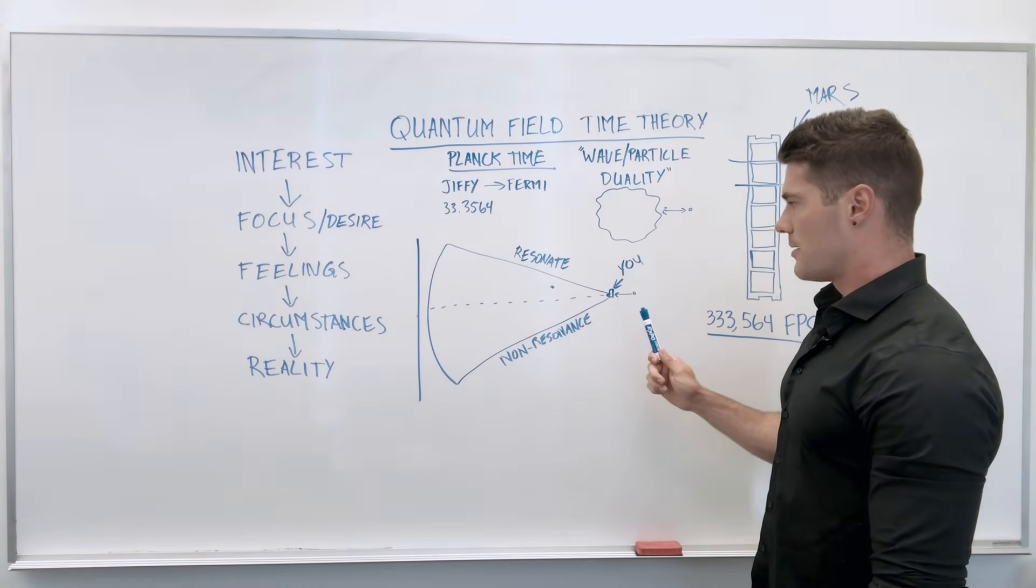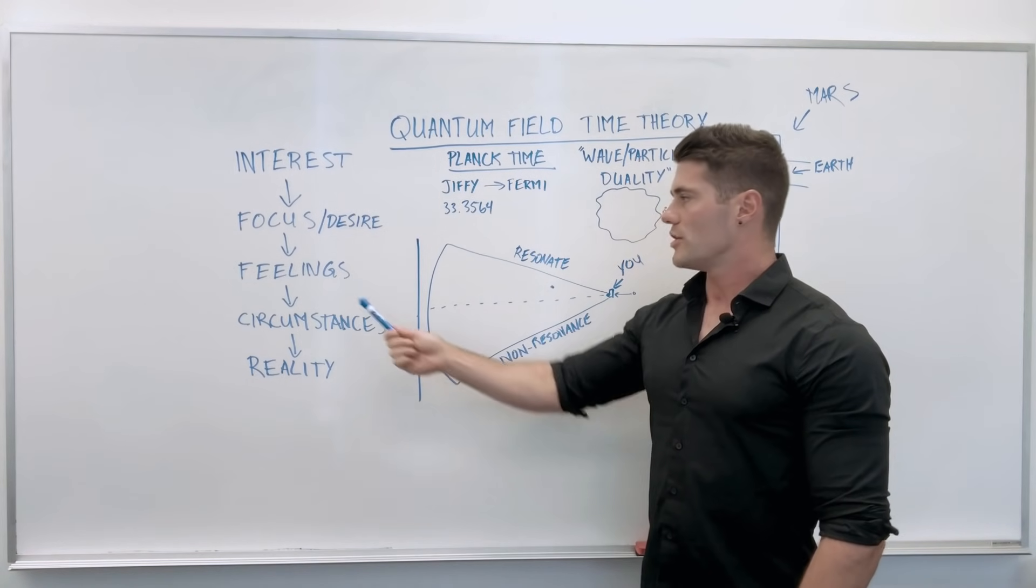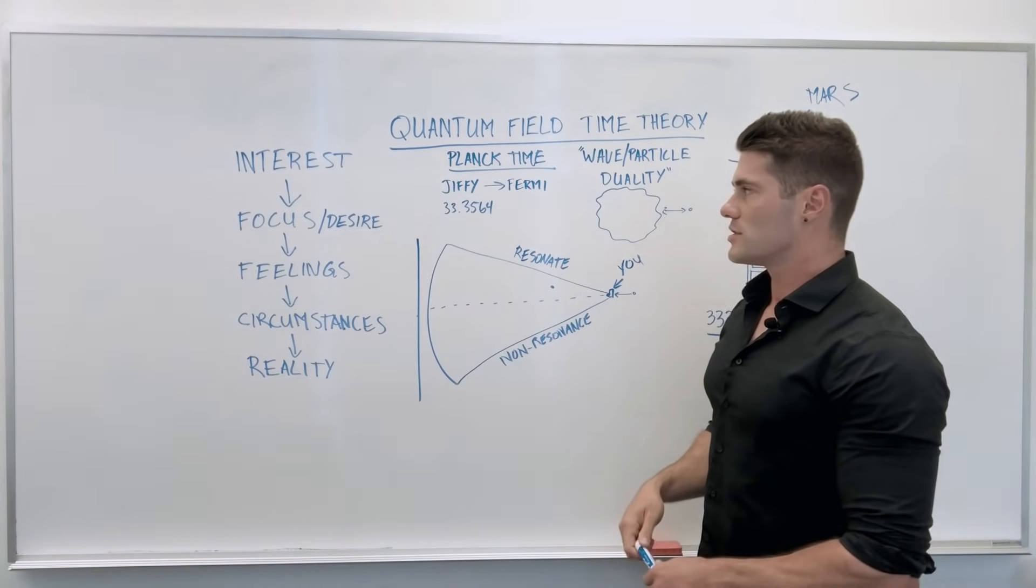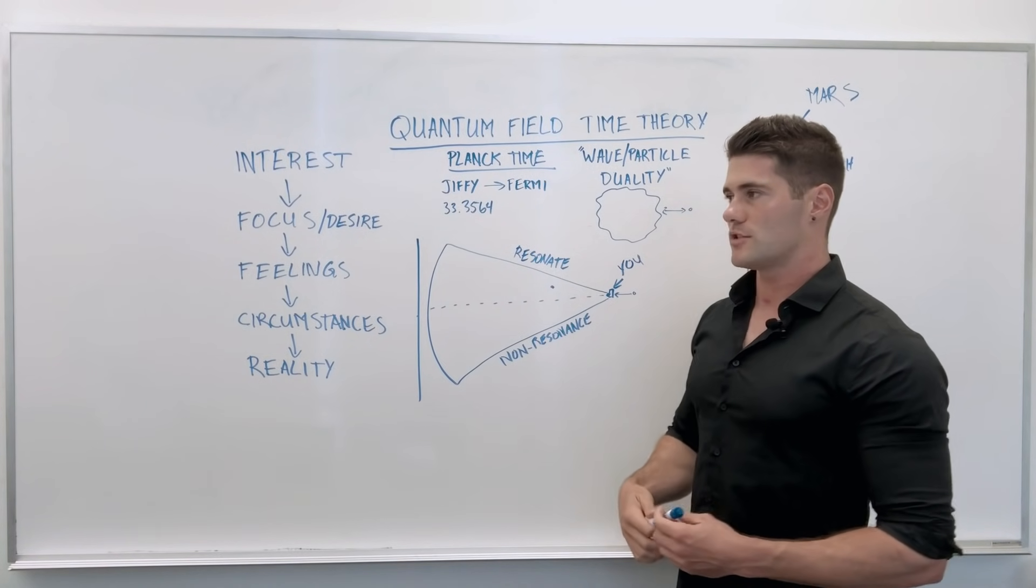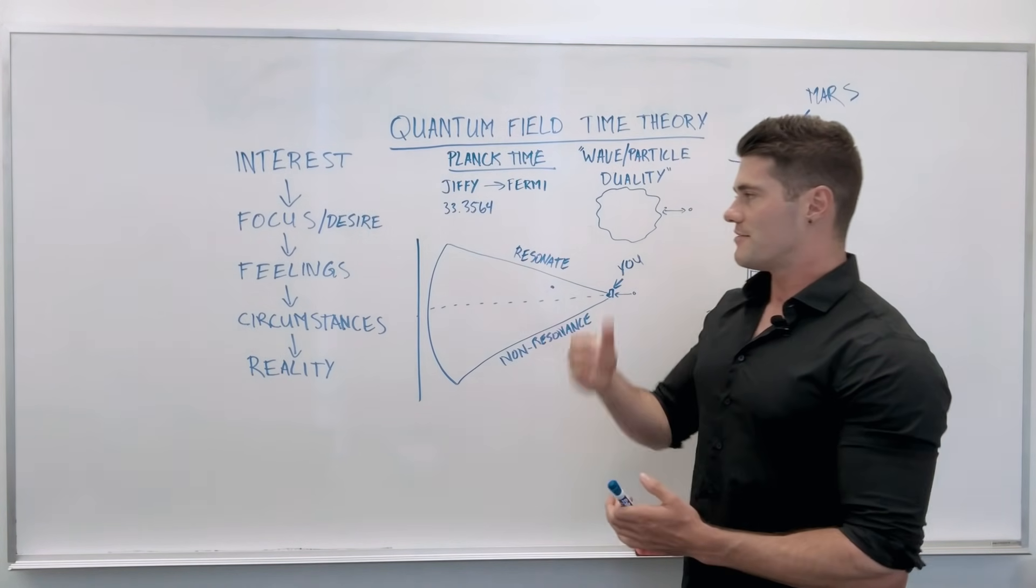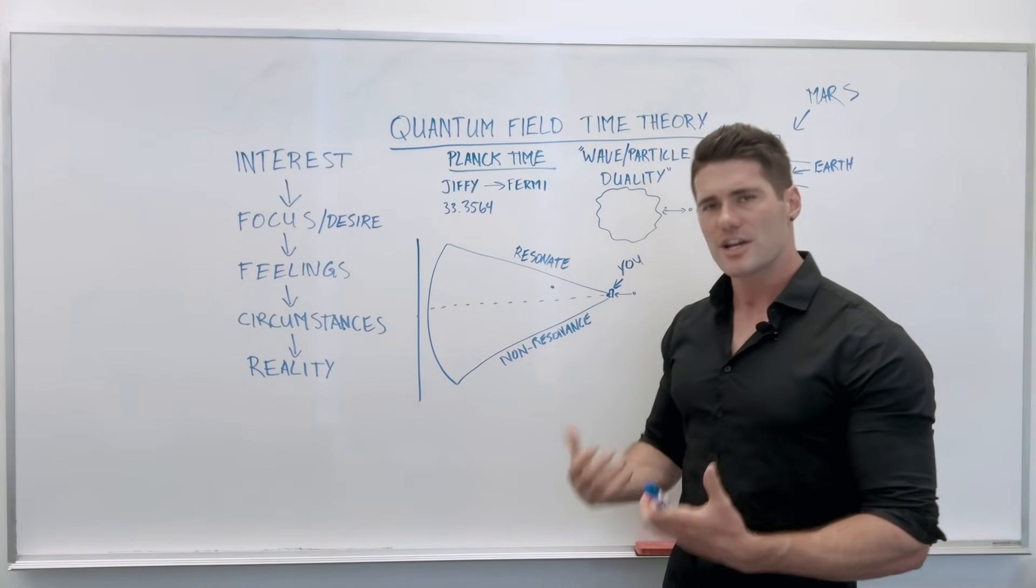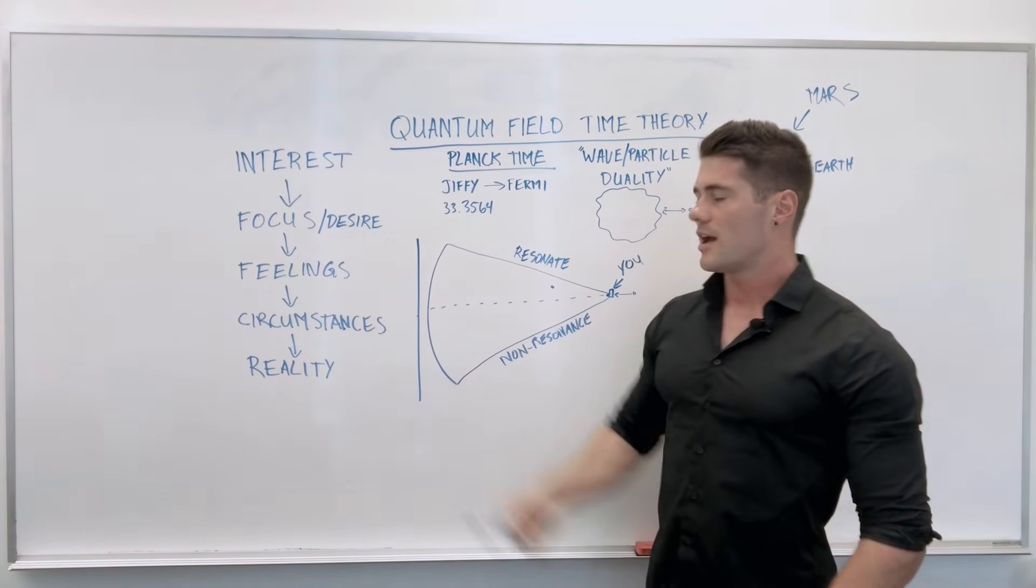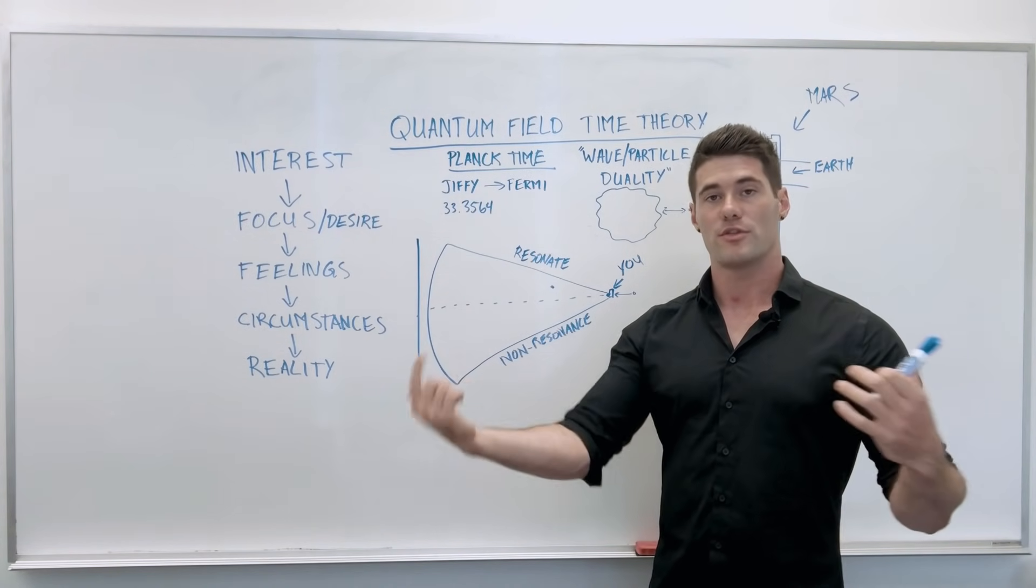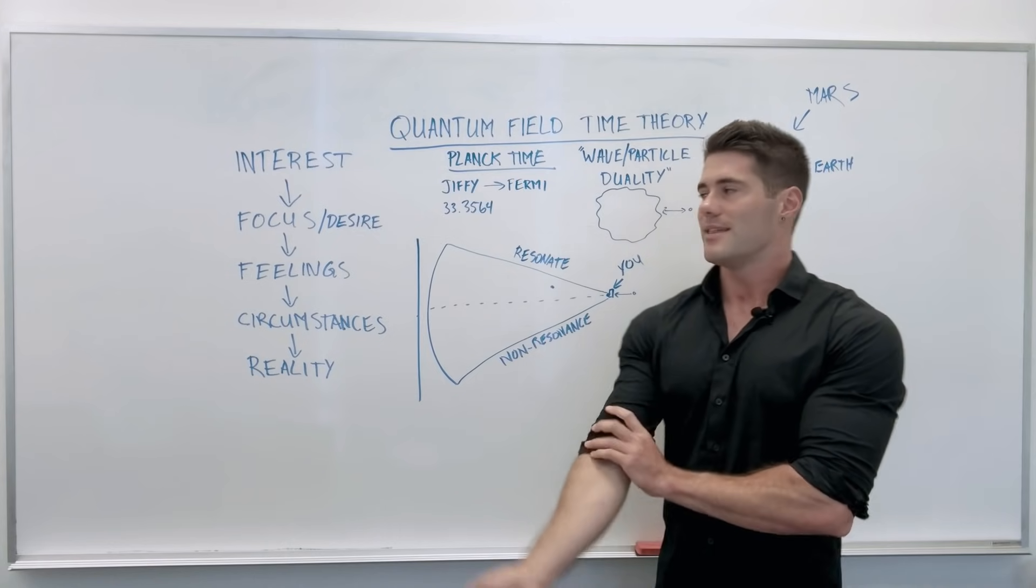The next part is that you should never allow your circumstances to dictate what you feel about your life. This is the order that manifestation happens in. First, you have to become interested in something that sparks your attention. If you're interested in it, you become focused on it. You start to desire it. That focus and desire eventually develops feelings. This is something I love doing, I enjoy doing this, I am passionate about it, it makes me feel ecstatic. Those feelings eventually will shift your circumstances if you stay in that vibrational state. Your circumstances will start to line up with the reality you're experiencing already inside of you, and then that becomes your reality.